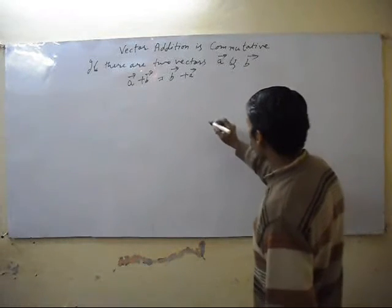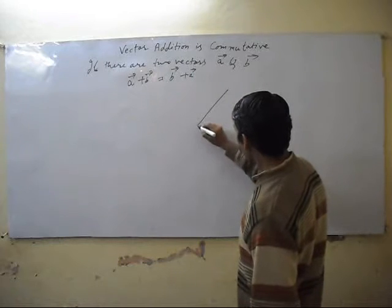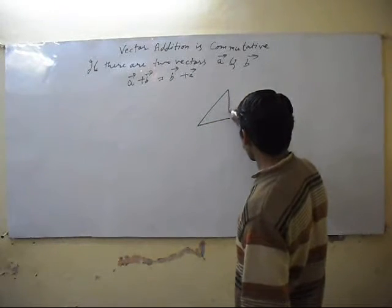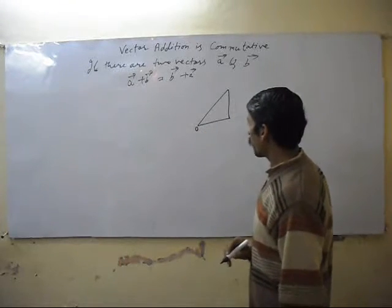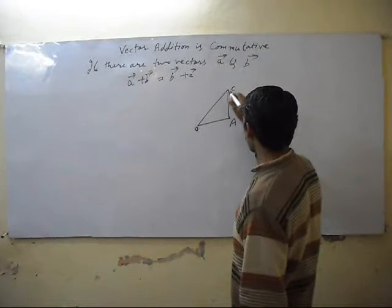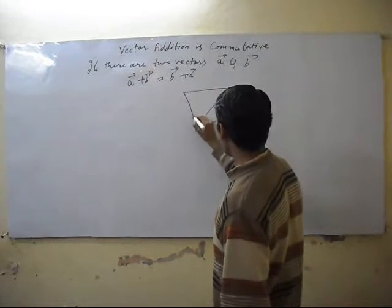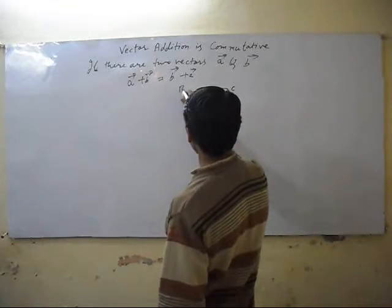First of all we make a triangle. This is first point O, then A, C, and this is B.